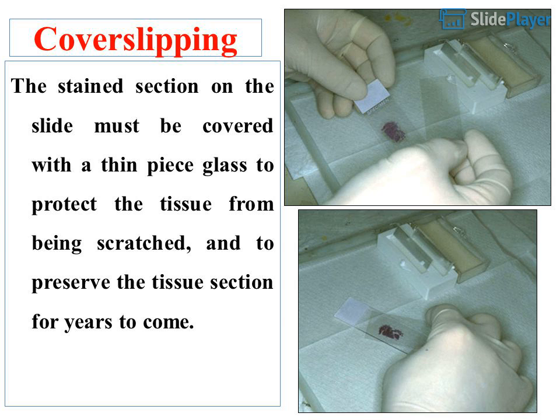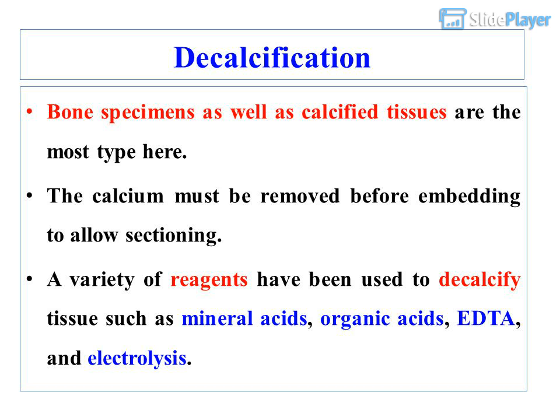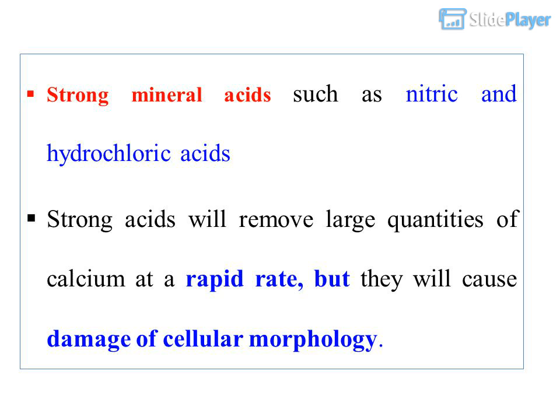Cover slipping: The stained section on the slide must be covered with a thin piece of glass to protect the tissue from being scratched, and to preserve the tissue section for years to come. Decalcification: Bone specimens and calcified tissues require removal of calcium before embedding to allow sectioning. A variety of reagents are used, such as mineral acids, organic acids, EDTA, and electrolysis. Strong mineral acids such as nitric and hydrochloric acids will remove large quantities of calcium rapidly, but they cause damage to cellular morphology.